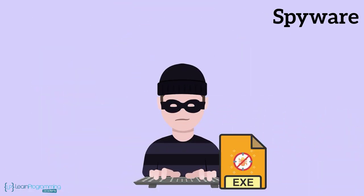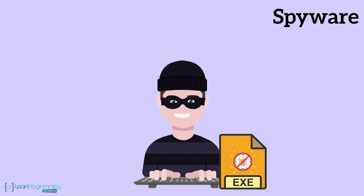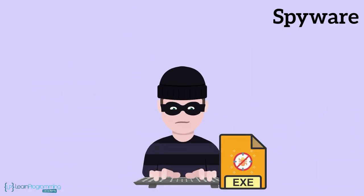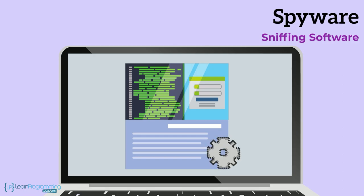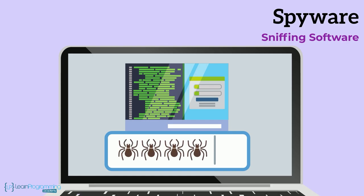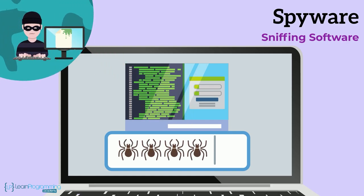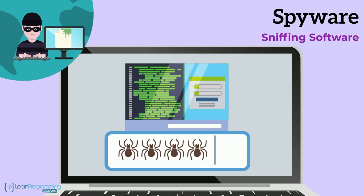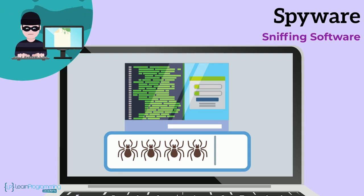Spyware has several configurations or types. One type, sniffing software, collects information about activities on a computer — such as a keylogger that captures keyboard keystrokes — and sends that information back to the instigator computer for use in some other destructive or corrupt manner.